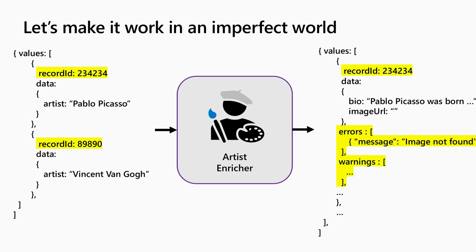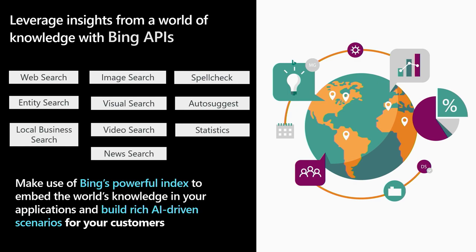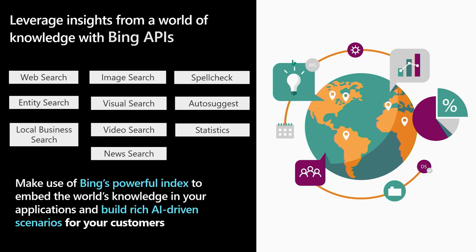We have talked about the input-output interface, but the skill has to do something — and where does it get this logic? This is where you come in. It's a custom skill, you create your own, and this is where you shine. In some cases you may have tools that do that already. In the case of artist enrichment, there has to be something out there that knows about the world. So let me make a small commercial for the Bing APIs — some of our cognitive services have knowledge of the world. I actually used the Bing entity search API and grabbed it as a custom skill.